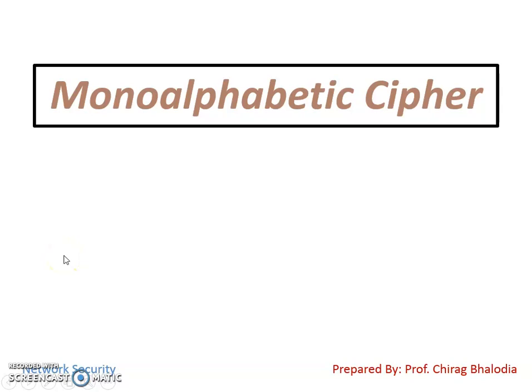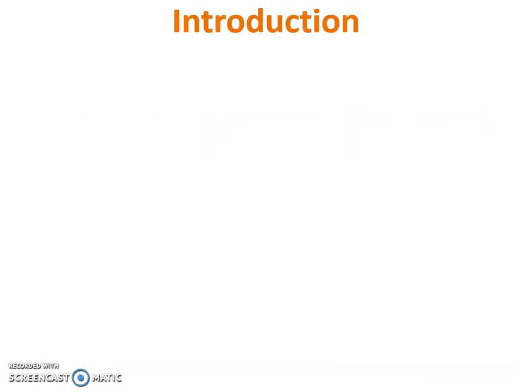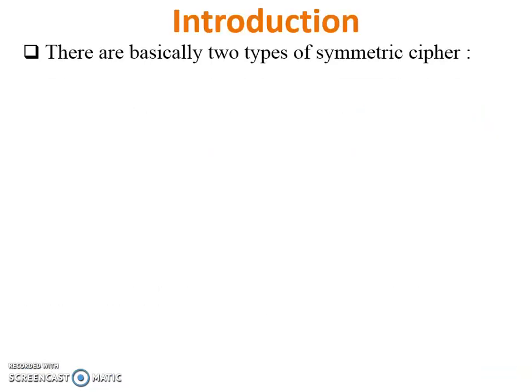Hello friends, myself Chirak Balodia. Today I am going to teach you mono alphabetic cipher in network security. There are basically two types of symmetric ciphers: the first one is substitution cipher, and the second one is transposition cipher.